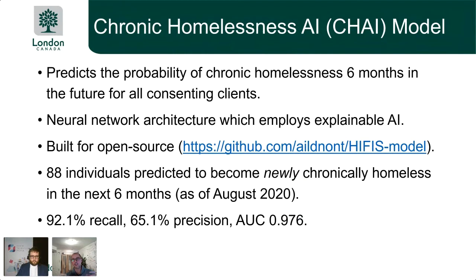It's integrated into our HIFIS application, our homeless information management system — kind of like a CRM — and predictions are delivered through an in-app report to caseworkers. The model architecture is a unique hybrid of a recurrent neural network and a fully connected multilayer perceptron. It employs explainable AI to help build trust, eliminate unintended bias, and assist in feature engineering. It's also open source on our GitHub — well-documented, modular, and extensible, so other municipalities using the same database schema can easily train their own model.